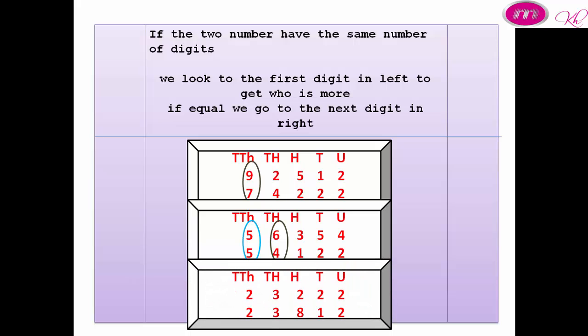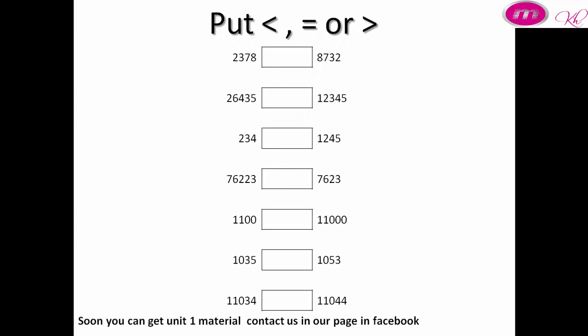Another example. We look at the first digit on the left — ten thousand: two and two are equal. Go to the right — thousands: three and three are equal. Go to the right — hundreds: two and eight. That means the second number is more than the first number.